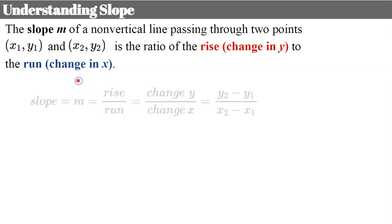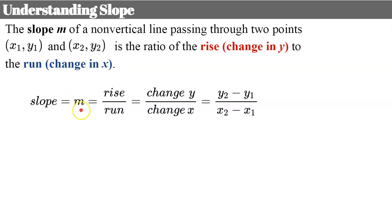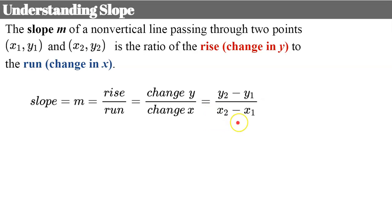Let's look at what that looks like in a formula. Slope, referred to with the variable m, is a ratio. If you have a graphed line, you can do the rise over the run between any two points. You can also think of this as the change in y over the change in x. Here's the formula if you know two ordered pairs: subtract the y-coordinates and divide by the change in the x-coordinates.